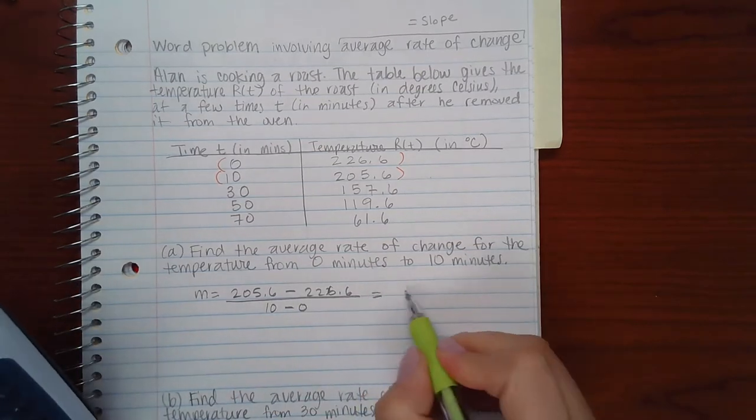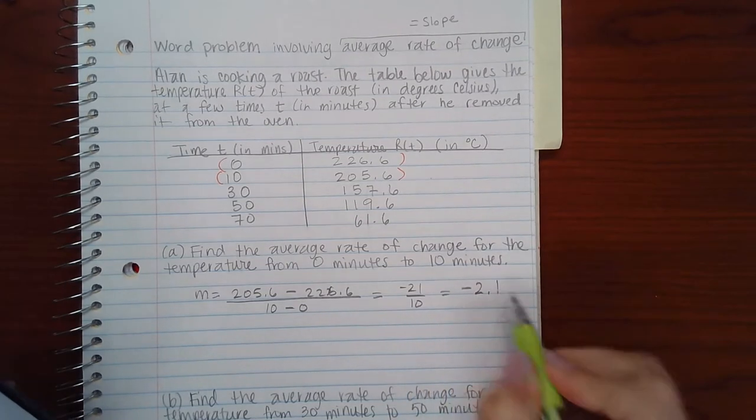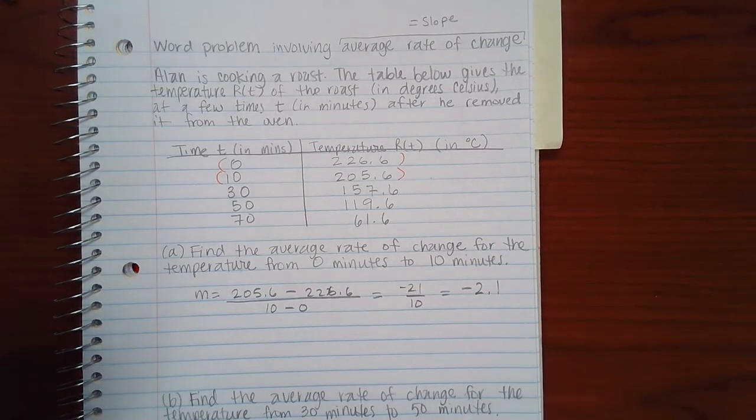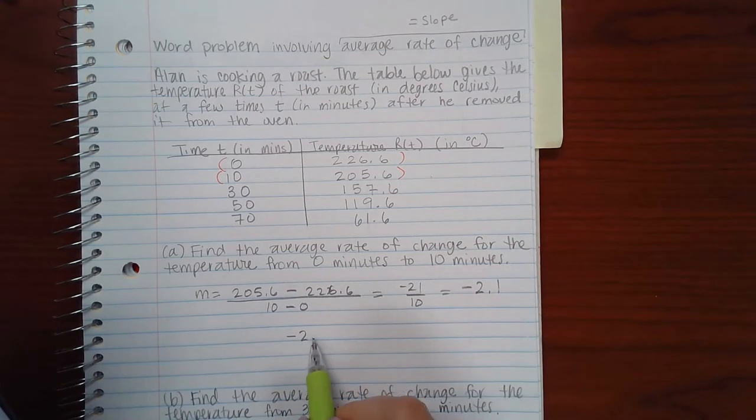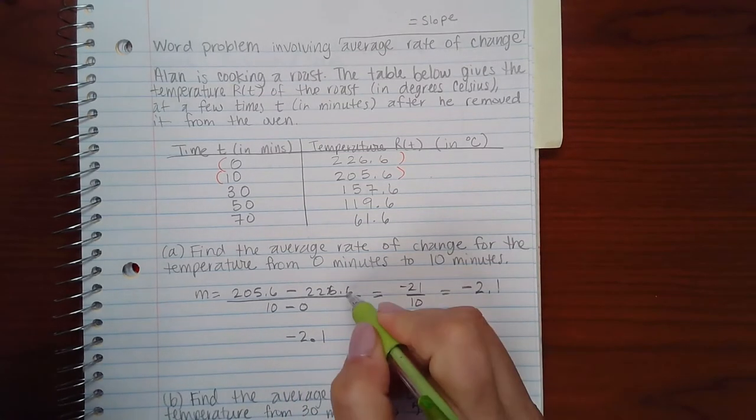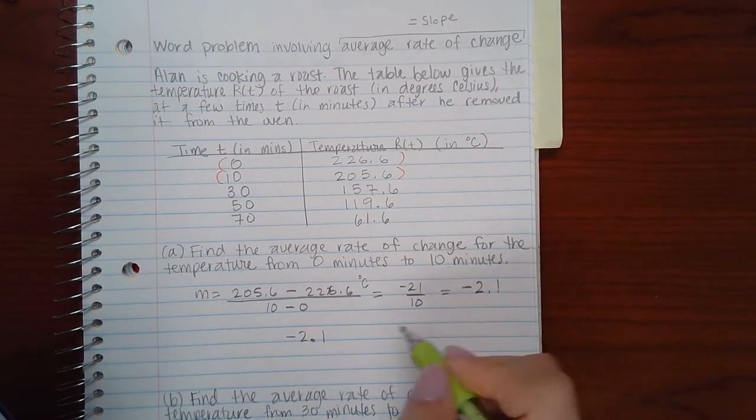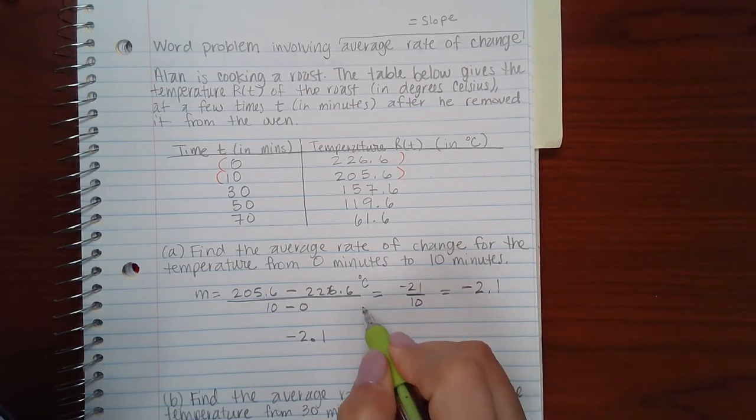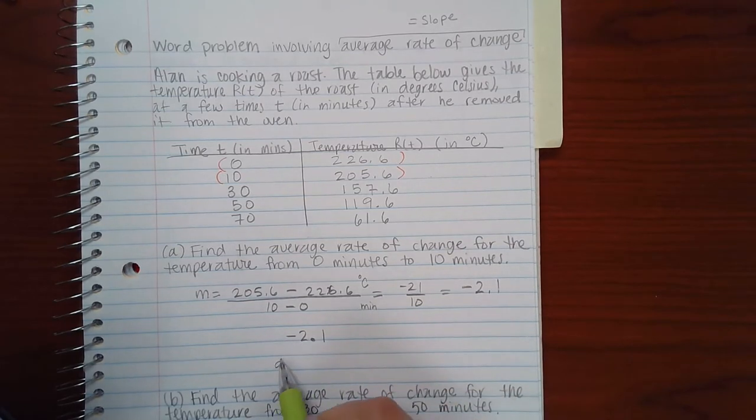I get negative 21 over 10, or negative 2.1. Now typically they put the units as well, but I can put the units myself. I just have to remember that the Y coordinates were on top, which were in degrees Celsius, and the X coordinates were on bottom, which were in minutes. So it's going to basically decrease 2.1 degrees Celsius per minute.